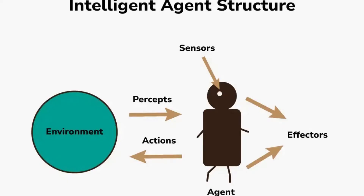Agent architecture refers to how an intelligent agent's internal system is structured. The simplest form is reactive architecture, where the agent responds to stimuli without considering past or future states, making it fast but limited. Deliberative architecture, in contrast, involves higher-level reasoning where the agent plans and predicts future states before taking action, making it slower but more informed.